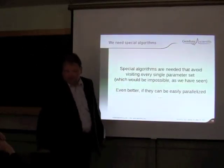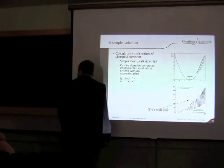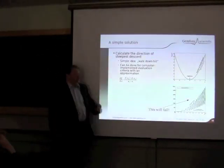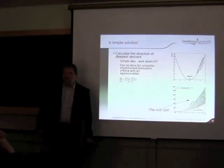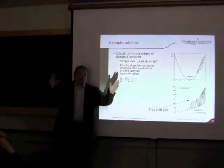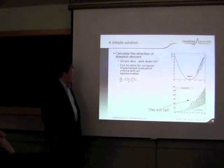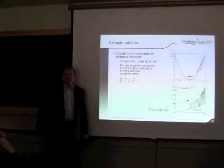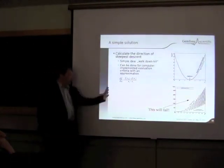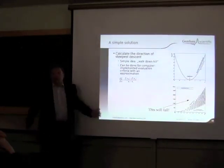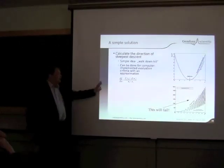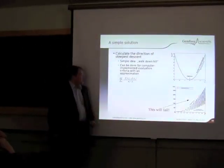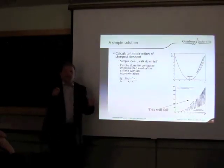What we need is special algorithms that avoid visiting every single parameter set — which is impossible anyway — and these can be easily parallelized. A very simple solution would be to find the direction of steepest descent, make the assumption that the global optimum is in that direction, take a step in that direction, and start from the beginning. This works very well for a parabola, but it won't work for a function with multiple local optima, because there you will end up just in the next local optimum. However, this can be adapted to real-life optimization problems by going to the difference quotient instead of the differential quotient — making finite steps instead of infinitesimal steps.